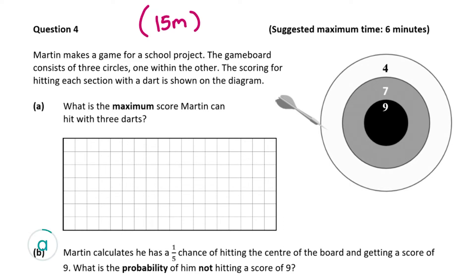Question A asks us what is the maximum score Martin can hit with three darts. The highest score we can see is 9, so the maximum score is if you hit 9 three times. 9 multiplied by 3 equals 27, and that's the maximum score someone can hit with three darts.